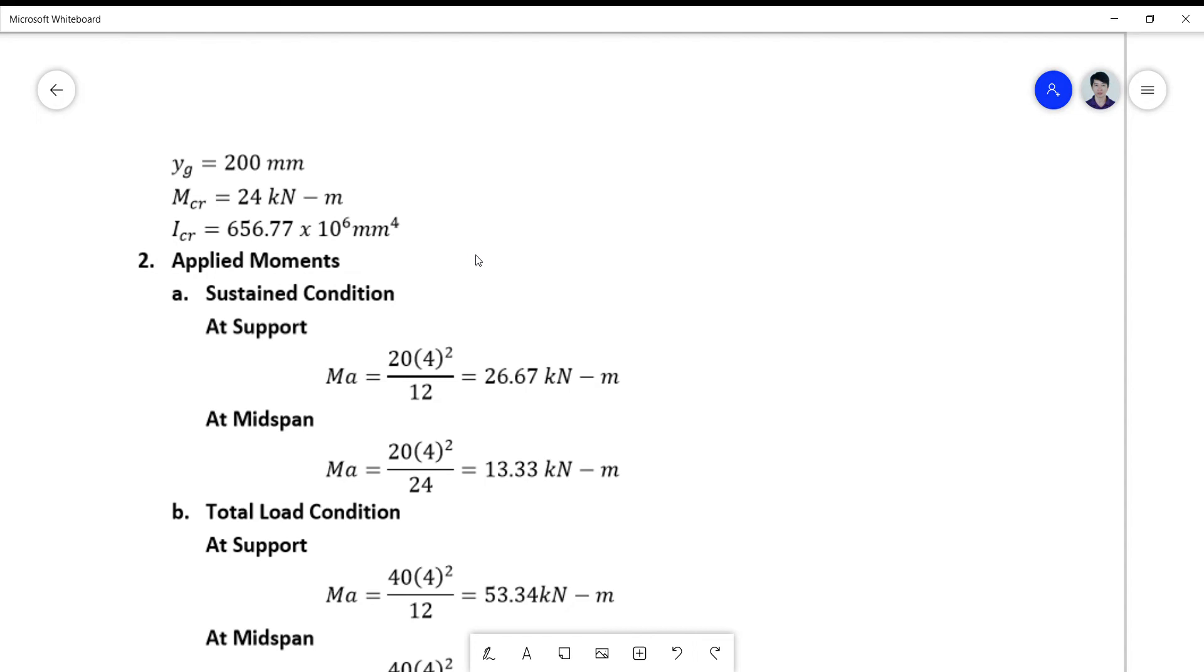So what changes is on step 2. There's an additional computation for your applied moment. This is added. And also in the total load condition, you have a support moment which was obtained from the diagram above.